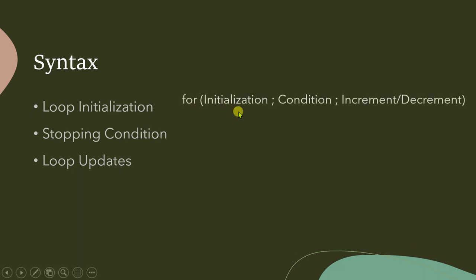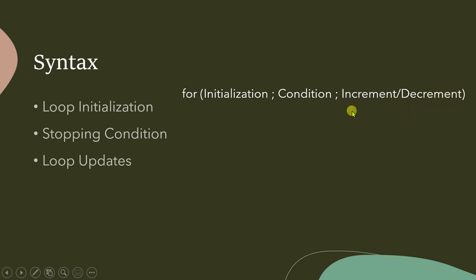All three sections are written in the same line in a for loop. The keyword 'for' is written in lowercase, and all sections are represented inside parentheses: initialization, then the stopping condition, then the increment/decrement part. All three sections must be separated by semicolons — that is mandatory for a for loop.